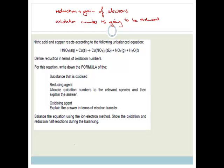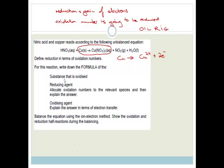Let's start with something that is pretty obvious to look at — copper going to copper nitrate. We know that the oxidation number of Cu is zero, because it is a pure element. It is going to Cu²⁺, and it has given away two electrons. We know that oxidation is loss, reduction is gain. So if it has lost electrons, it means that it has been oxidized.